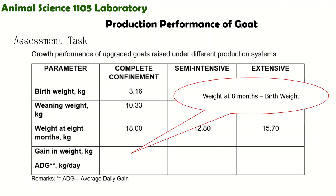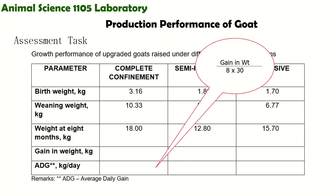What we will compute is gain in weight and average daily gain. The formula for gain in weight is: weight at 8 months minus birth weight. For average daily gain, the formula is gain in weight divided by 8 times 30 — where 8 is the number of months, multiplied by 30 to convert into days.